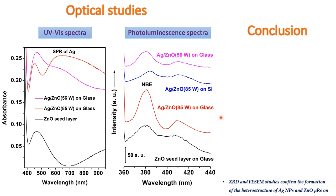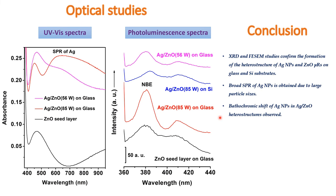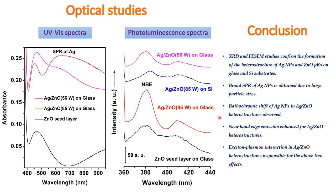We can conclude that silver nanoparticle and zinc oxide microrod heterostructures are successfully developed on glass and silicon substrates. Silver nanoparticles have a broad plasmon peak centered at around 530 nanometers due to their large particle sizes. A bathochromic shift — that is, the red shift of the plasmon peak of silver nanoparticles in silver zinc oxide heterostructures — is also observed. In the photoluminescence spectra, a threefold enhancement is observed in the near band-edge emission peak for silver zinc oxide heterostructures. The overlapping of the exciton emission of zinc oxide microrods and the broad plasmon peak of silver nanoparticles indicates exciton-plasmon interaction. That's all in this poster presentation. On behalf of all the authors, I would like to thank you all for your kind attention.